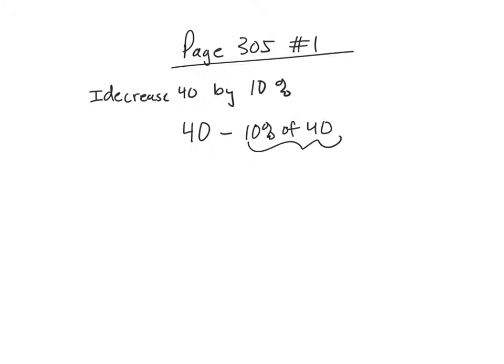Let's say that we were supposed to decrease 40 by 10%. Well, if that's the case, then that would mean start with 40 and then take away 10% of 40. So if we calculated that, 10% of 40 means .10 times 40, which would be 4. So if I took 40 minus 4, I would get 36.